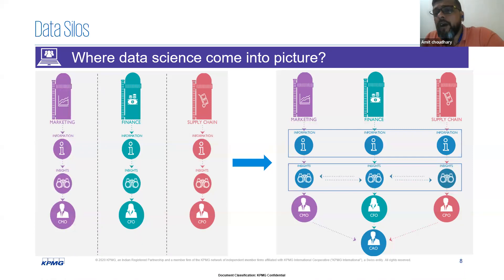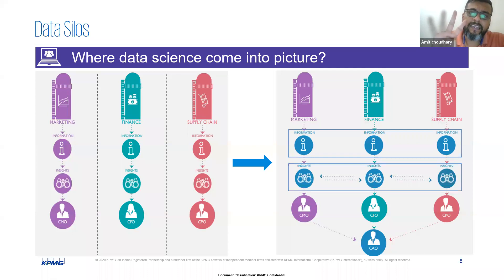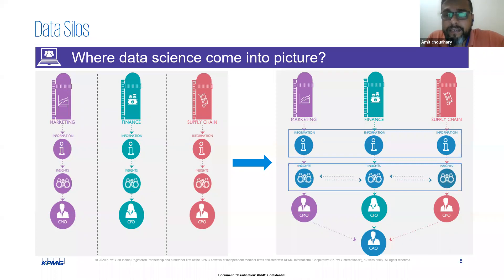When we talk about data analytics, you should also be very clear about which domain of data analytics you want to make your career in. In a broader sense, data analytics is divided into four different categories: A — descriptive analytics, B — diagnostic analytics, C — predictive analytics, and D — prescriptive analytics.